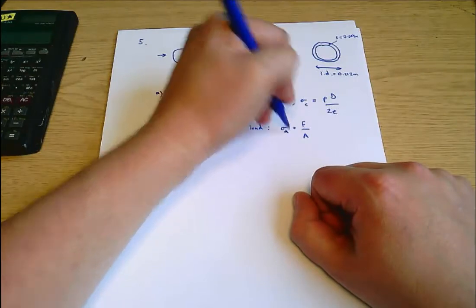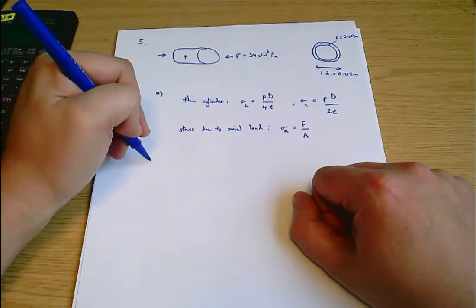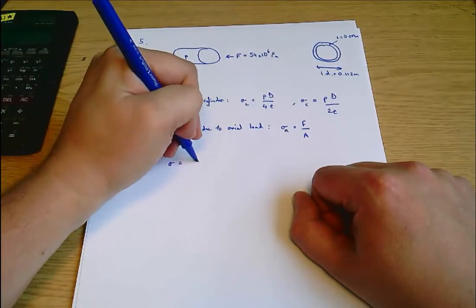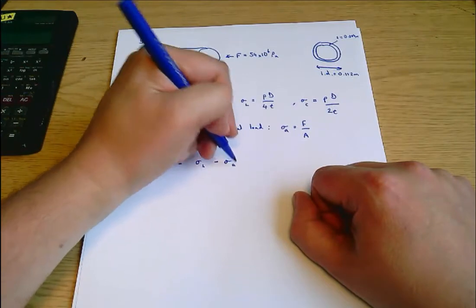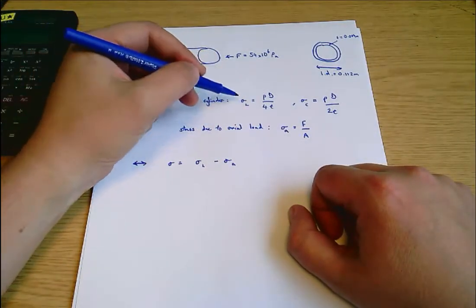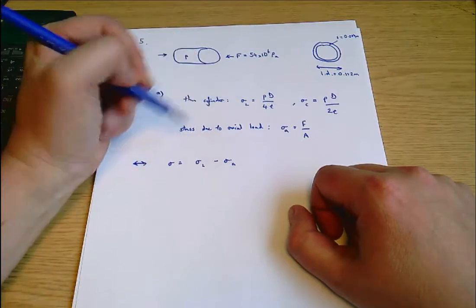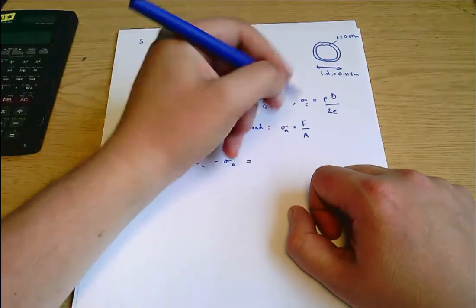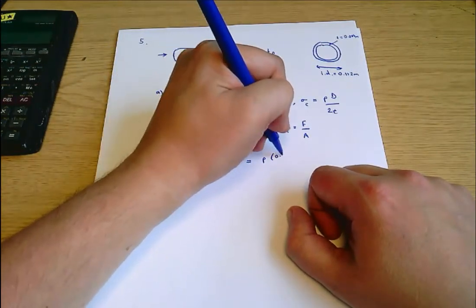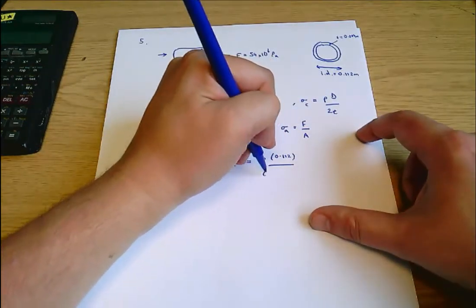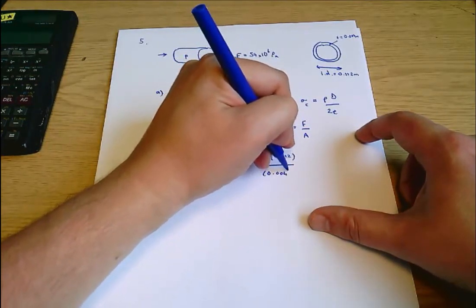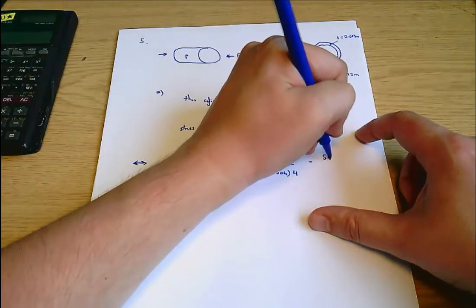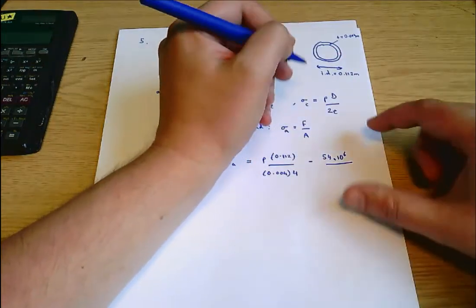I guess what we want to do now is put some numbers in. I'm just going to call that sigma sub A. In this direction, sigma equals sigma L minus sigma sub A, so it's tension. That's going to be P times 0.112 over 0.004 times 4, minus F, which we know is 54 times 10 to the 6.